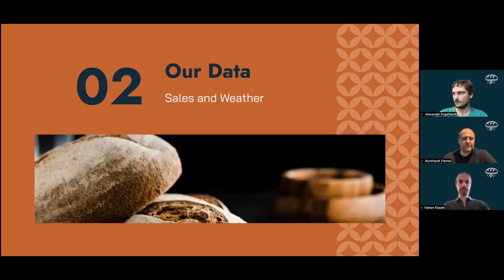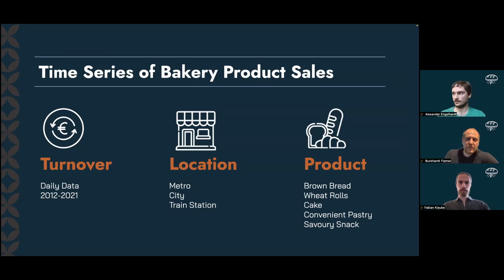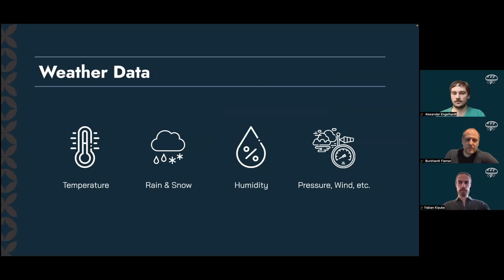The dataset comprises daily sales data in euros from 2012 to 2021 from three branches in the Vienna region: one metro station branch, one city center branch, and one train station branch. The sales data was split into five product categories: brown breads, wheat rolls, cakes, convenient pastries, and savory snacks — giving us sales data for three branches across five product categories. Additionally we had daily weather data for the same period, including temperature, whether it rained or snowed, humidity, pressure, wind, and other features. We also created features such as next day's weather and weather shifts from one day to the next.